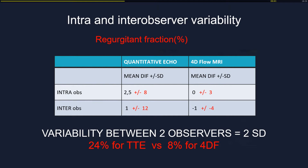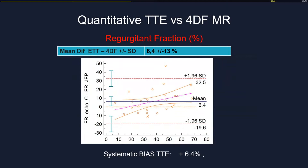The results show that variability with TTE was three times larger than with 4D flow — a very important finding. We also found a systematic bias where TTE overestimated regurgitation fraction compared to 4D flow MRI by about 6.4 percent. Notably, this tendency for TTE overestimation was also found in studies comparing TTE and 2D phase-contrast MRI.